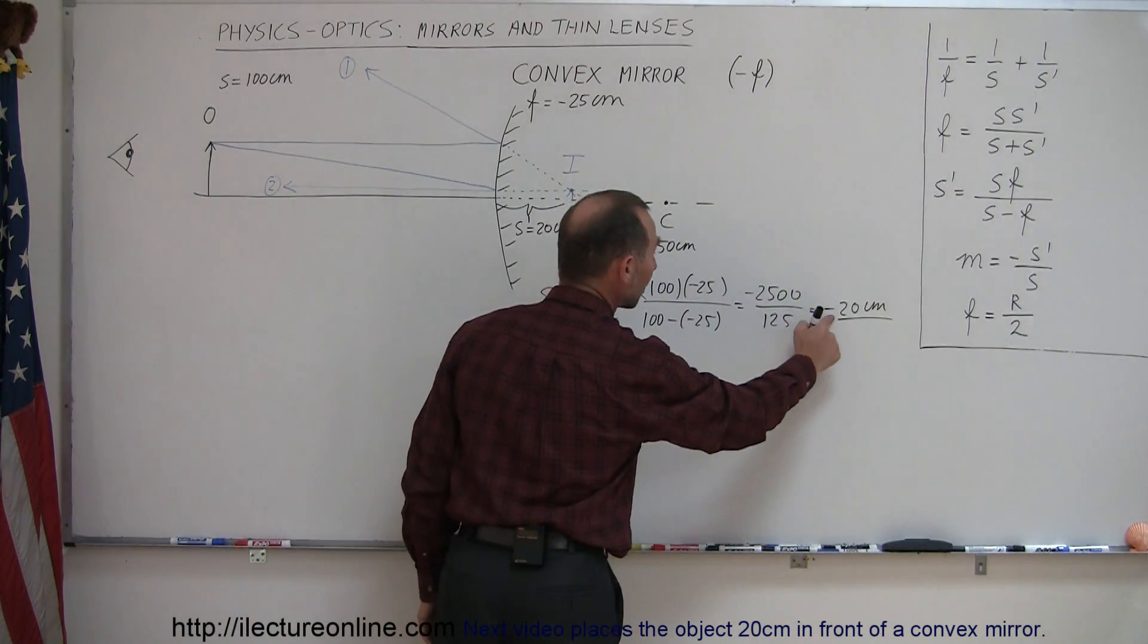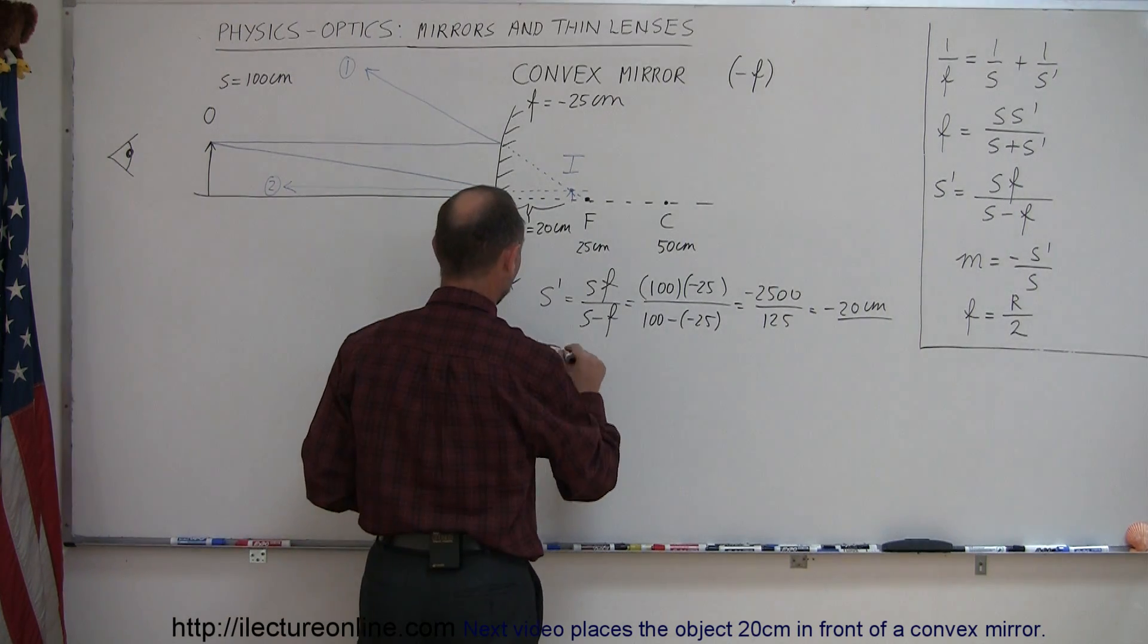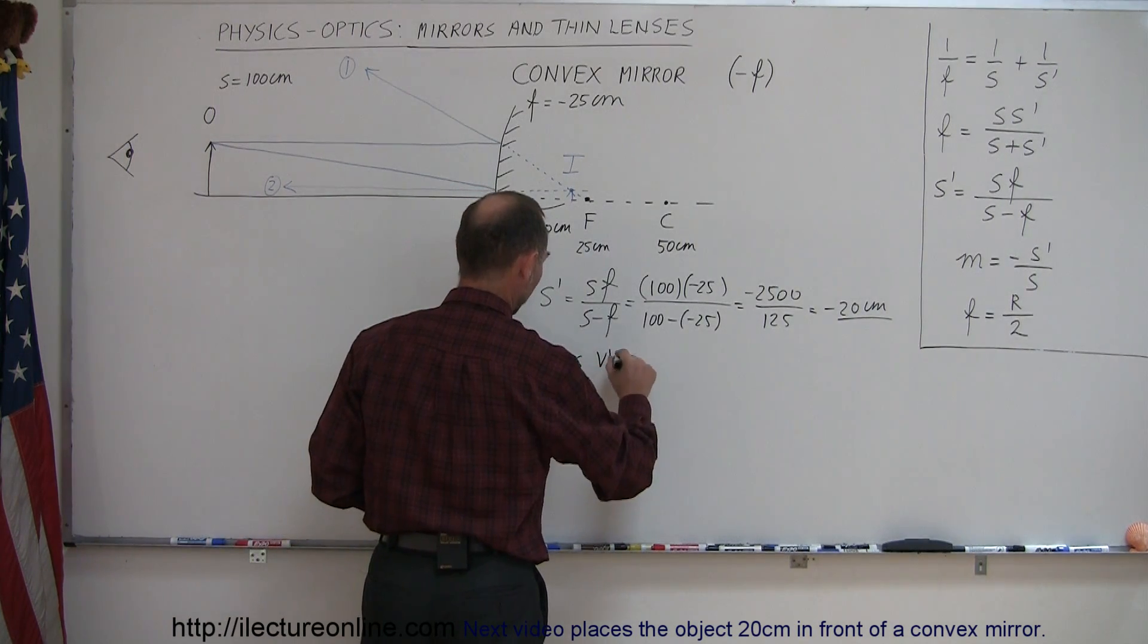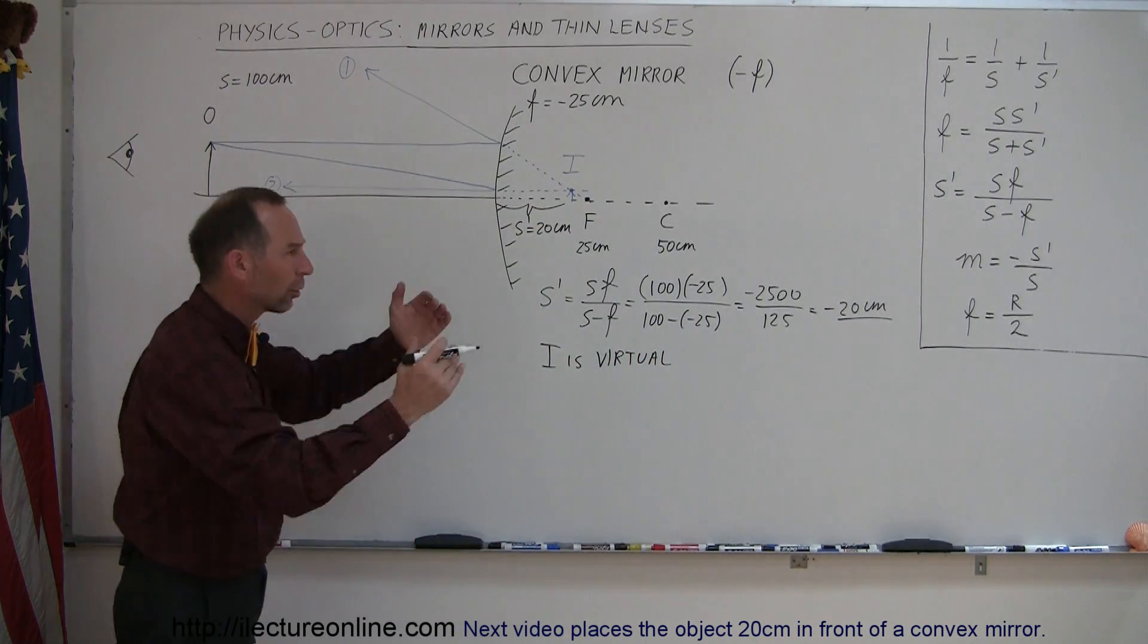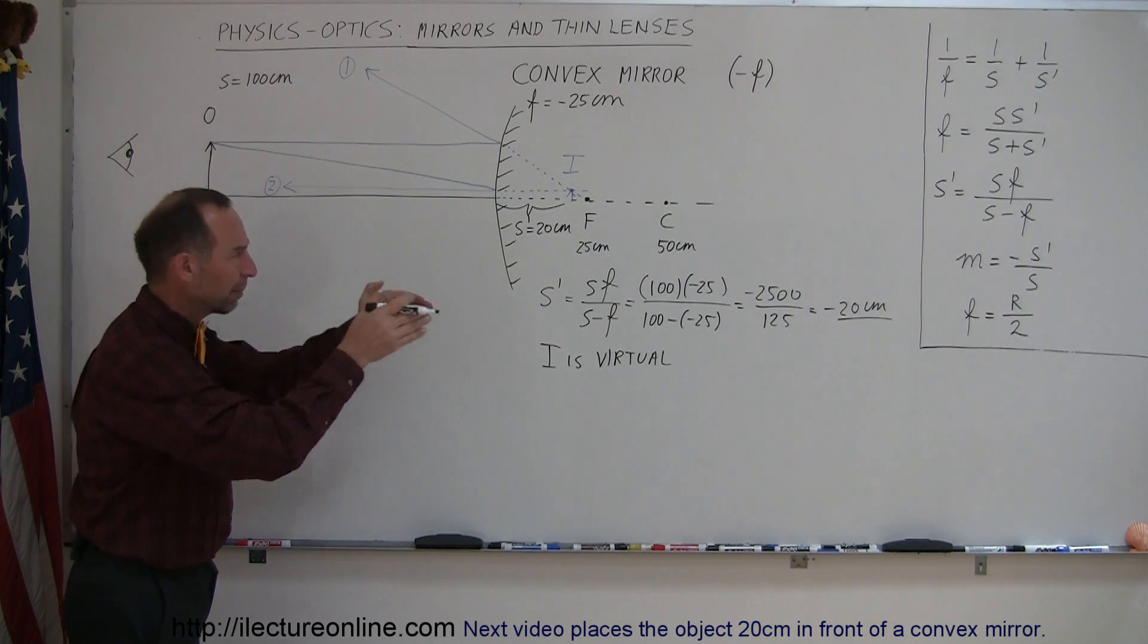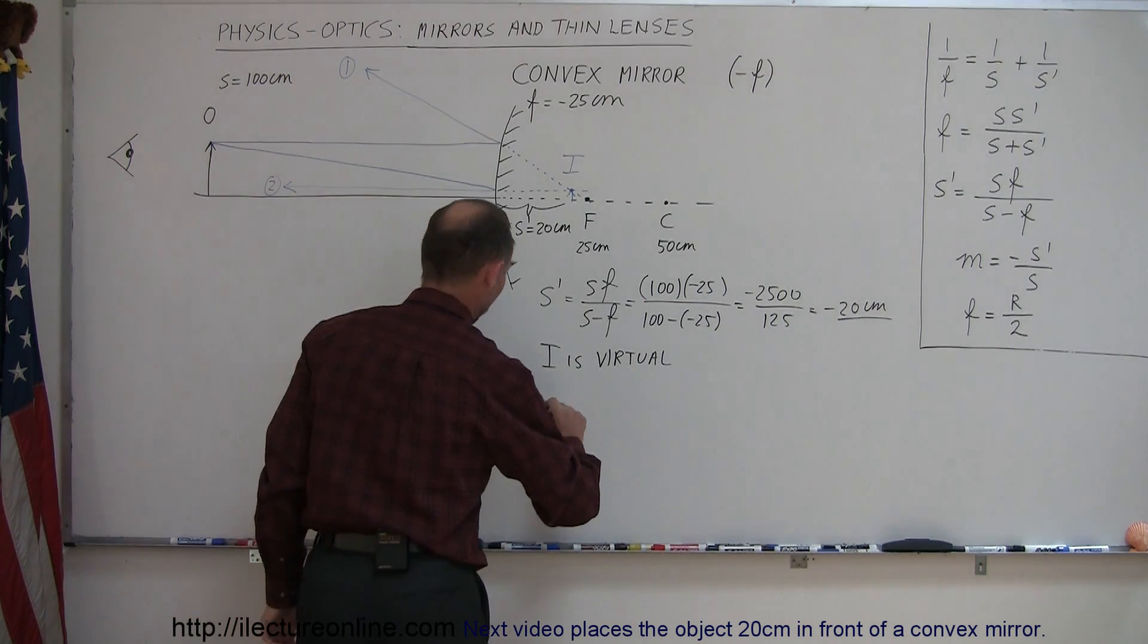Negative means that it's behind the mirror, and of course if the image is behind the mirror, that means it's a virtual image. So the image is virtual. Virtual means it's not real, it's just imagined by the brain looking at those rays coming from an apparent point behind the mirror.